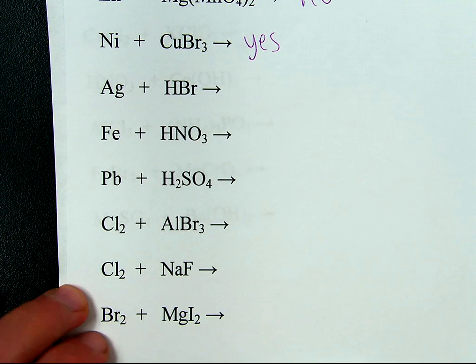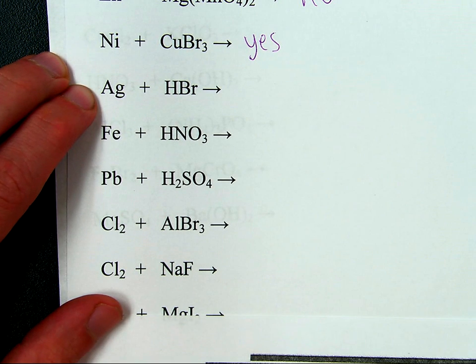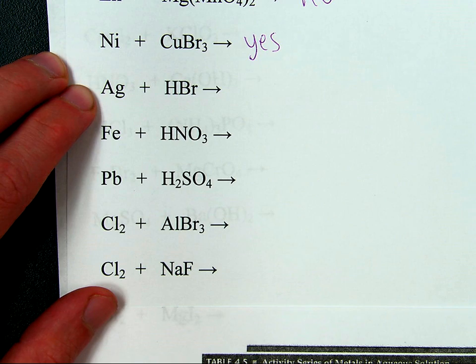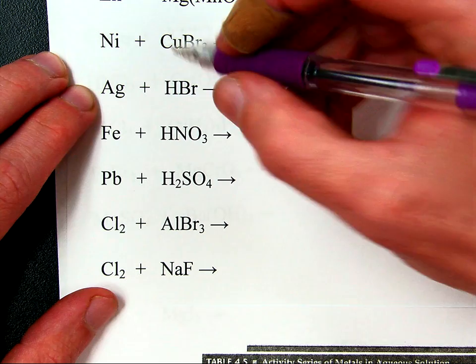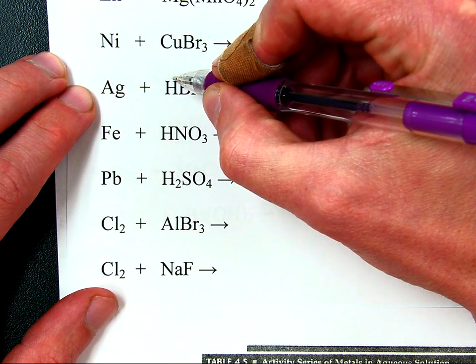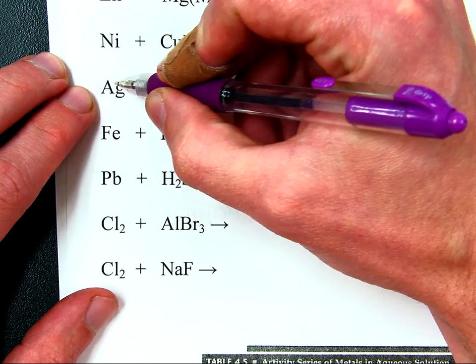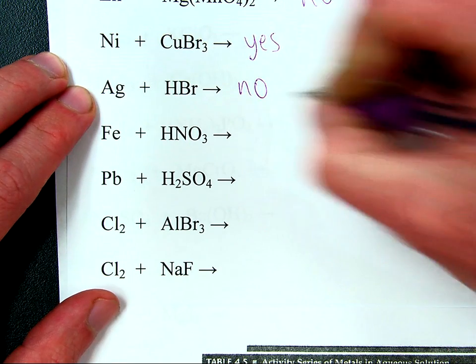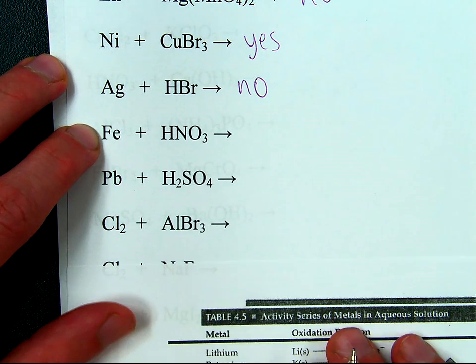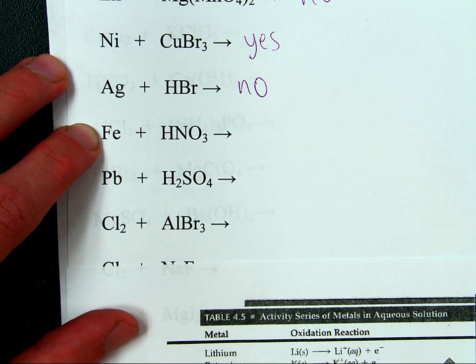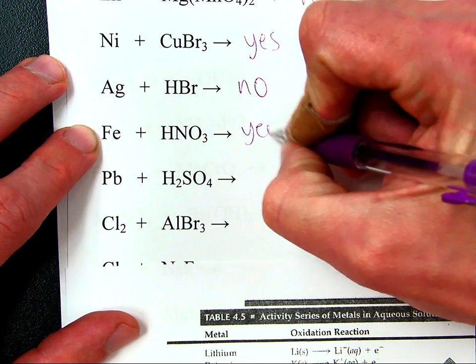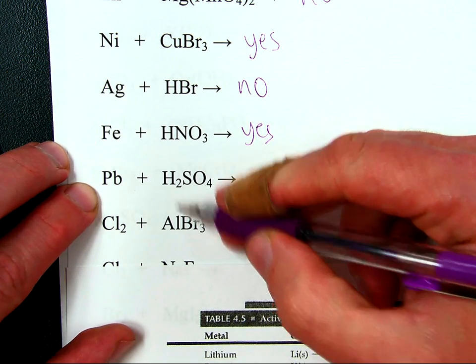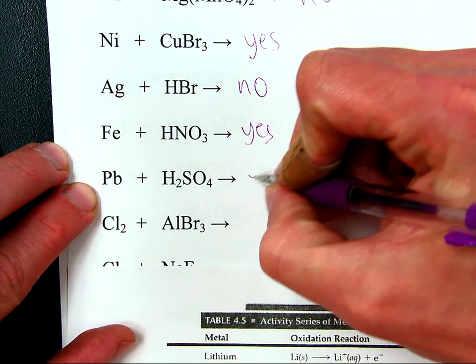And now I'll provide the answers. Silver is not above hydrogen on the list. Therefore, it can't replace hydrogen because positive silver would replace positive hydrogen. So the answer is no. Silver is not above hydrogen on the list. Iron is above hydrogen on the list, so yes. Lead is above hydrogen on the list, so yes.